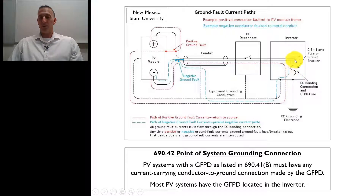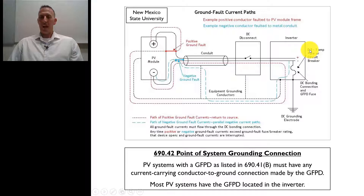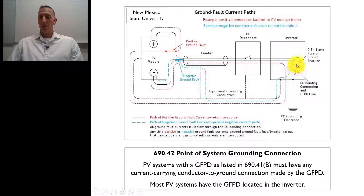The electrons will flow through this fuse back out through the circuit, back up to the positive side. When enough current flows through this — which as you can see in this system it could be a half of an amp to an amp — when more than, say, an amp flows through this one amp fuse, that fuse will blow, disconnect that connection between the negative, that grounded conductor, it now becomes ungrounded, and the inverter will shut down and electrons will stop flowing. That's how a negative ground fault would trip or blow that fuse.